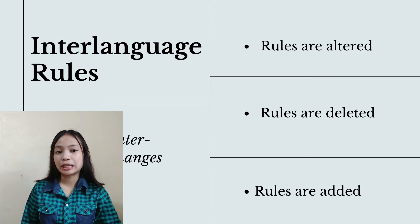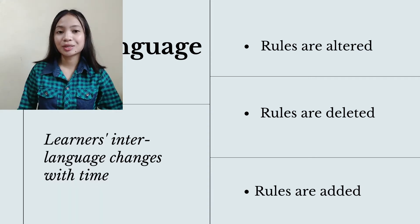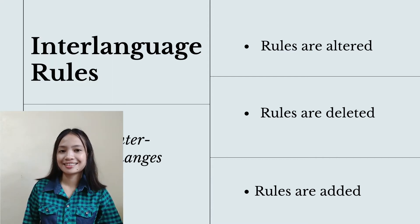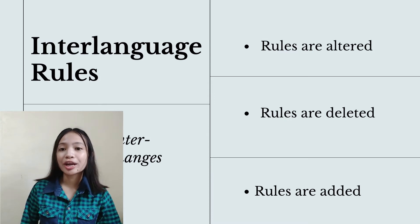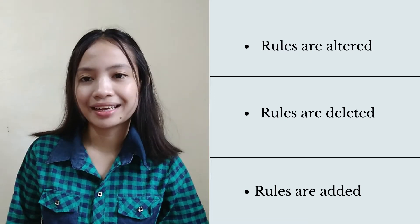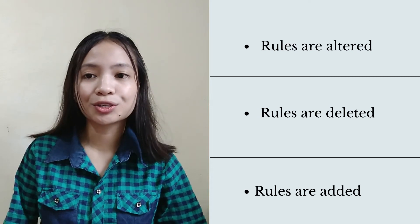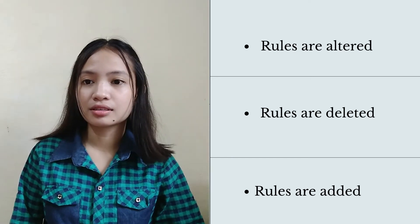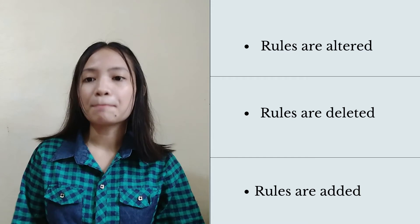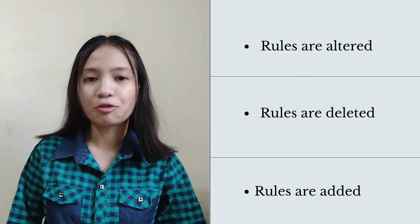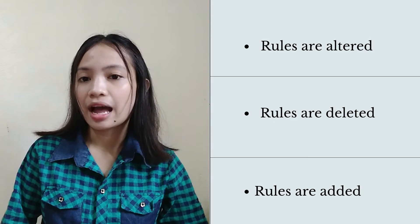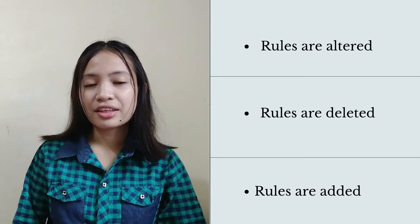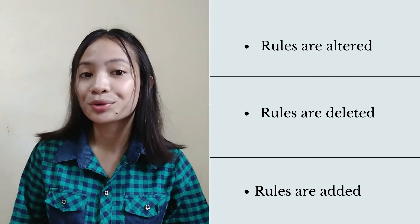Now let's discuss interlanguage rules. Learners' interlanguage changes with time. Interlanguage rules are not fixed — they are altered, deleted, or added. Interlanguage is systematic. Although different learners have different interlanguages, they all have their own rules within their variations. They may not align with the actual rules, but they are systematic. For example: 'I received money, I buy a new car, and I sell it.' This shows that the rules are set in predictable ways.